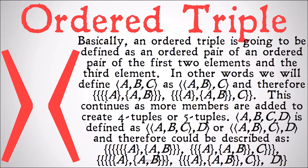An ordered triple is going to be defined as an ordered pair of an ordered pair with the first two elements and the third element. In other words, we define the ordered triple A, B, C as the ordered pair of the ordered pair A, B and C — and therefore that would be defined as the class of the class of the class of the class of A and the class of A, B, and C.